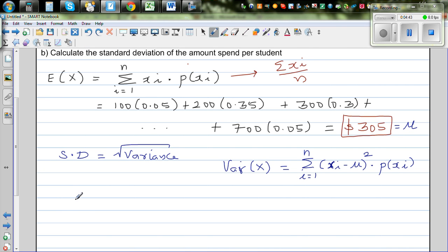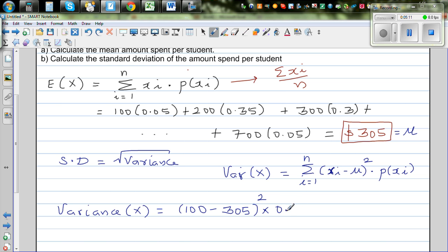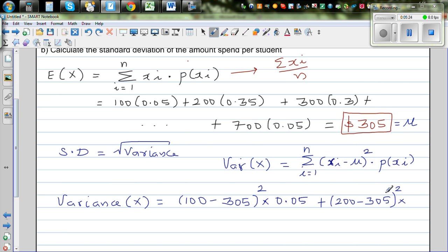That will give you variance, and then you find the square root of that, which will give you the standard deviation. So variance of x would be: your random variable is 100 minus your population mean mu, which is 305, squared times the respective probability, which is 0.05, plus again 200 minus 305, the whole squared times the respective probability, which is 0.35, and so on.